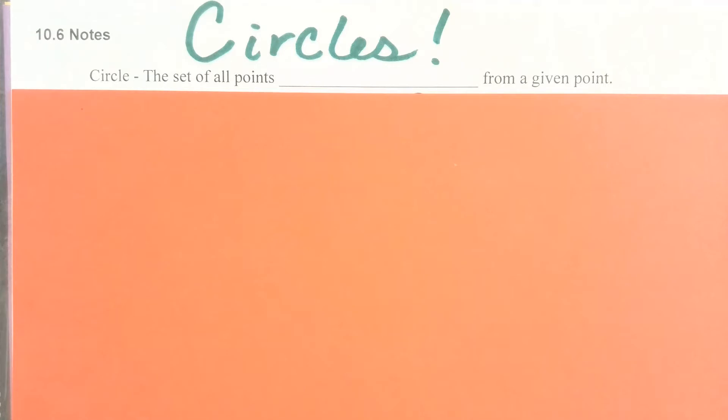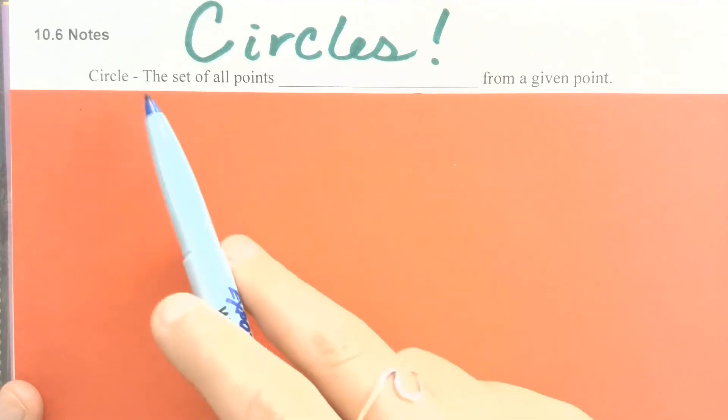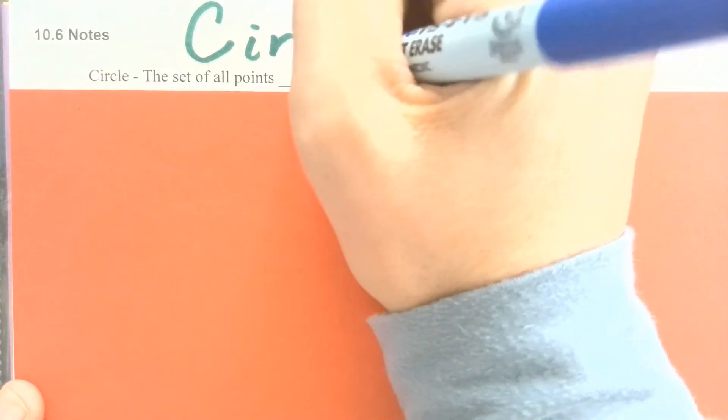Before we get to arc measures and arc lengths of circles, first I just want to add in some formal definitions, some notation that we might be using in this lesson. Our formal definition for a circle is just all of the points that are equidistant from a given point.